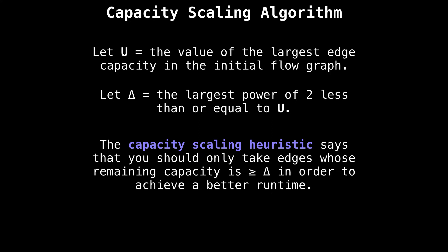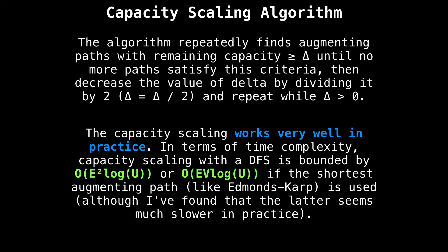The capacity scaling heuristic says that we should always take edges whose remaining capacity is greater than or equal to delta in order to achieve a better runtime. But that's not everything to the algorithm. The algorithm will repeatedly find augmenting paths through the flow graph which have a remaining capacity greater than or equal to delta until no more paths satisfy this criteria. Once this criteria is no longer met, what we do is decrease the value of delta by dividing it by two. And we repeat this process while delta is greater than zero.